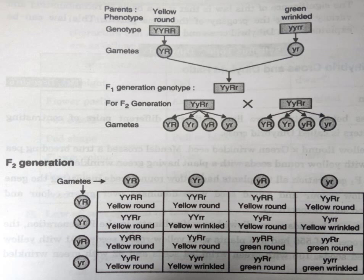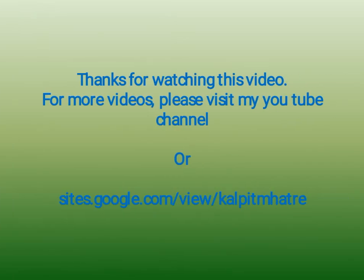So this is how we can study dihybrid cross and dihybrid ratio. In dihybrid cross, the phenotypic ratio is 9 yellow round, 3 yellow wrinkled, 3 green round, and 1 green wrinkled. The dihybrid ratio is the phenotypic ratio obtained in the F2 generation of a dihybrid cross, and it is always 9:3:3:1. That's all about dihybrid cross. Thanks for watching this video.